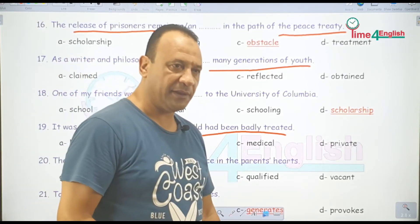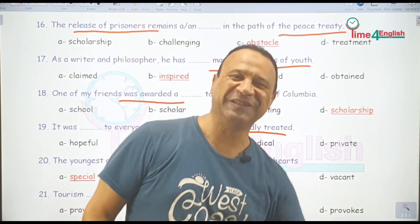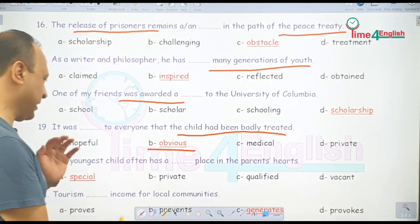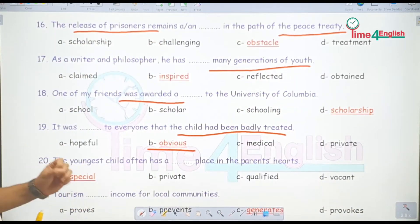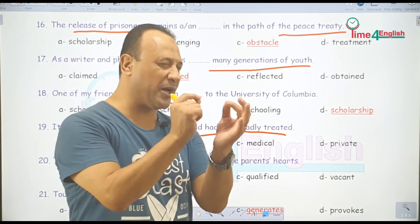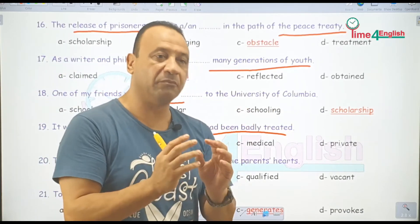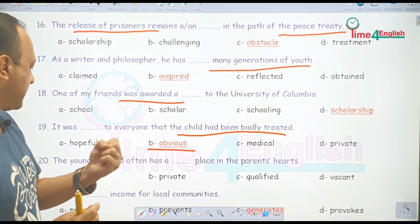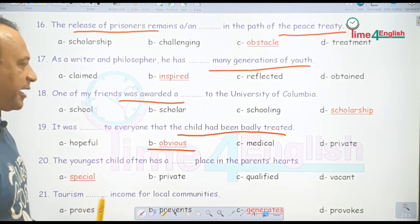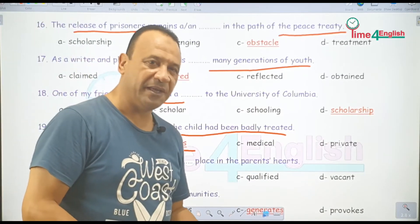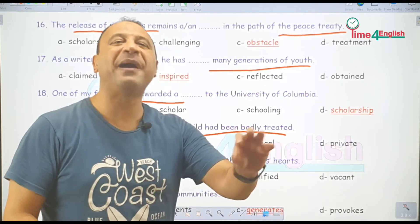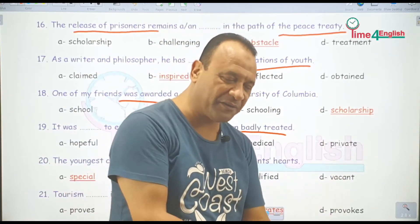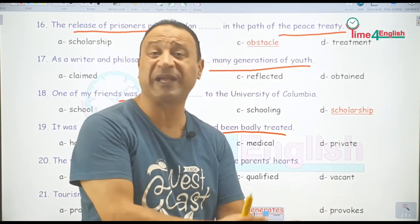The youngest child often has a special place in the parents' hearts. آخر العنقود — الطفل الصغير خالص — دايما بيبقى له مكانة خاصة — a special place in the parents' hearts. يعني دايما بيبقى له معزة أكتر من إخواته الكبار.